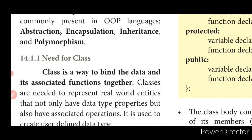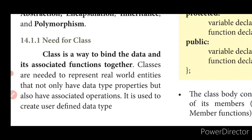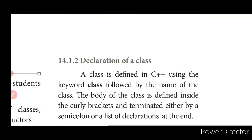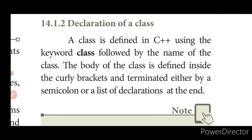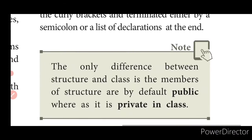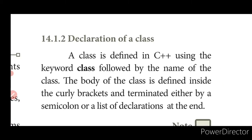A class binds the data and functions together into a single unit — it comes under the concept of encapsulation. We use a class for creating our own data type. Just as we have int and float, when we want to create our own data type we go for a class. A class is defined using the keyword 'class'. The body of the class is defined inside curly braces and terminated with a semicolon or a list of declarations at the end.